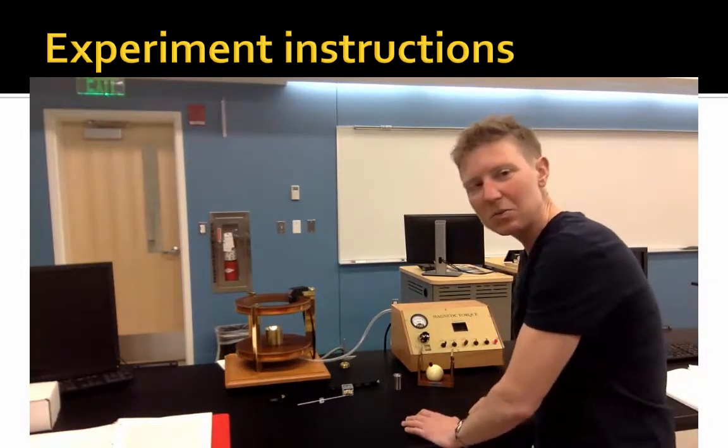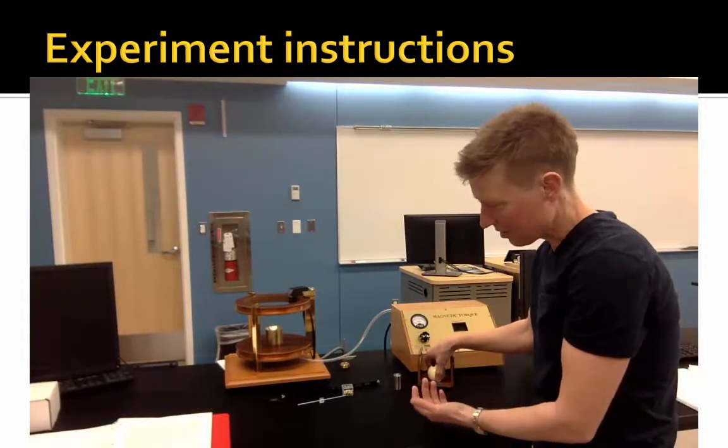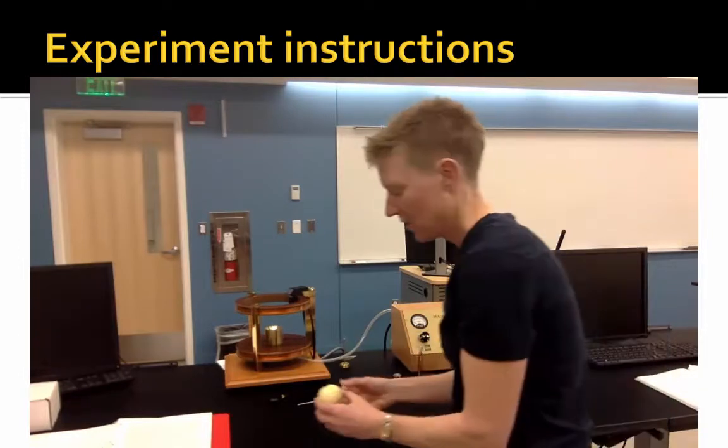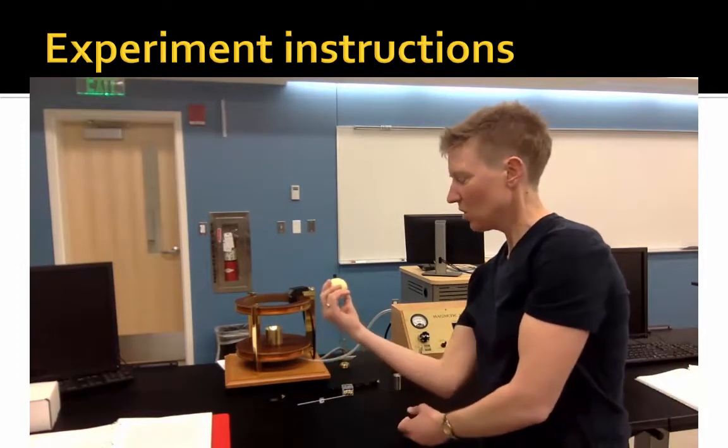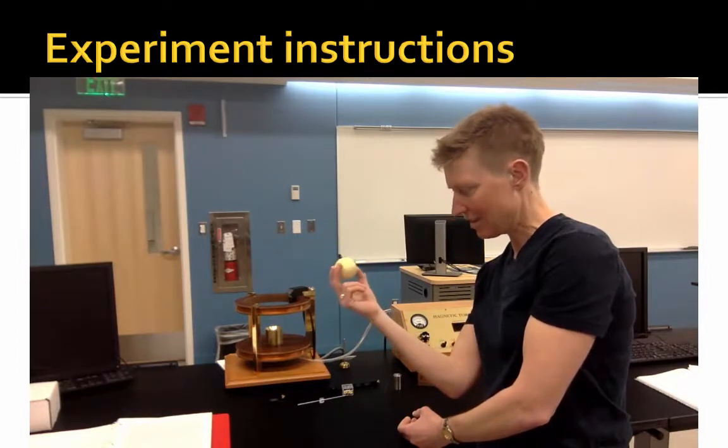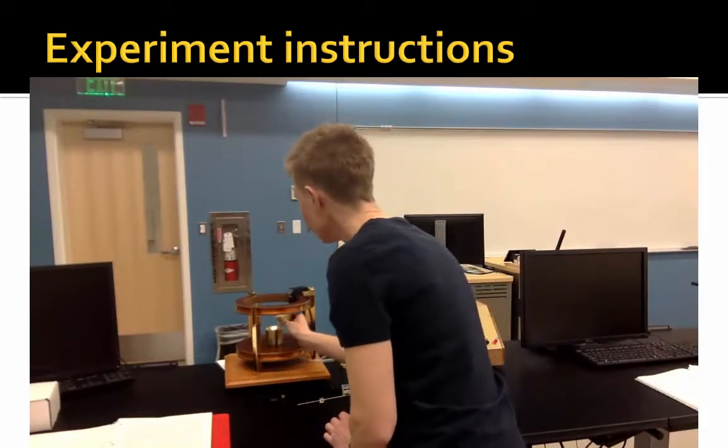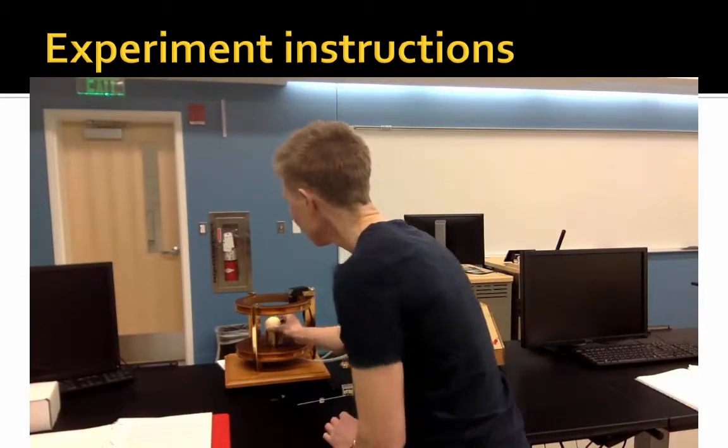The first experiment that we're going to do is balance a magnetic torque with a gravitational torque. So this cue ball has an internal magnetic disc in it that creates a dipole moment.